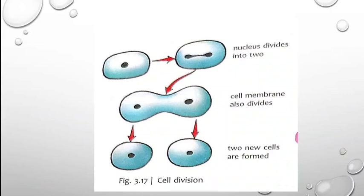For example, when a baby is born, a newborn baby is very, very small in size. But each and every month the baby keeps on growing and increasing in size. After one or two years, you will notice that the baby has not only grown in size but has started performing other functions also. This growth happens because of the process of cell division taking place in the body of the baby.